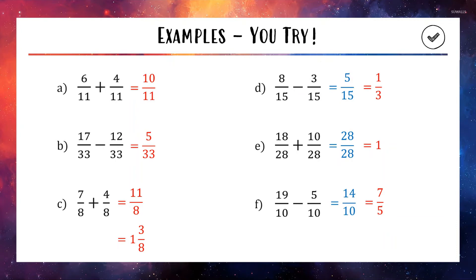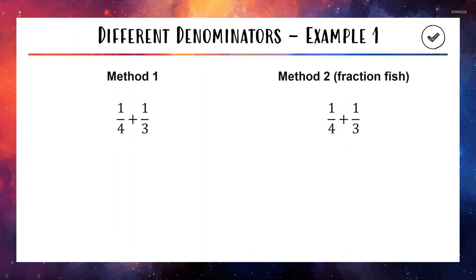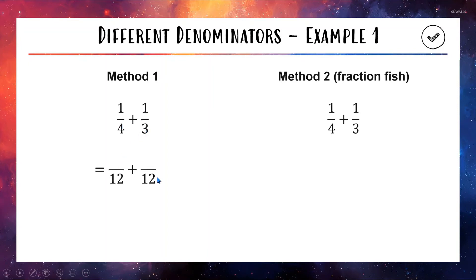Now we'll do examples where the denominators are not equal — a bit more challenging. I'll show you two methods and you can decide which you prefer. Our first question is 1 quarter plus 1 third. Method 1 is about changing the fractions to make the bases match. We ask: what number do both 4 and 3 multiply into? A good answer is 12, since that's 4 times 3. So we rewrite both fractions out of 12. For 1 quarter, we multiply top and bottom by 3 to get 3 over 12. For 1 third, we multiply top and bottom by 4 to get 4 over 12.